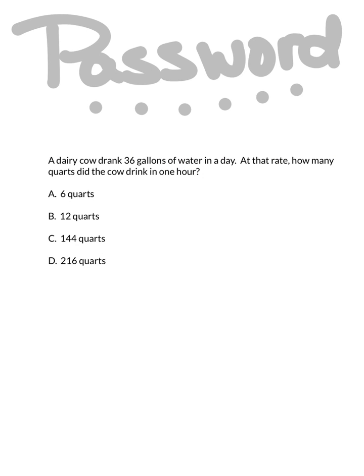So, now, let's take a look at tonight's password. A dairy cow drank 36 gallons of water in a day. At that rate, how many quarts did the cow drink in one hour? Now, the very first thing you have to keep in mind is, how many hours are there in a day? So, is the answer A, 6 quarts? B, 12 quarts? C, 144 quarts? Or D, 216 quarts? Be sure to work this problem out, record it in your math journal, and bring it with you to class tomorrow. We'll see you then.